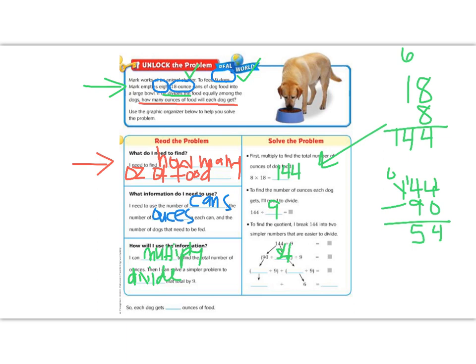So we think of our partial quotients. I've picked two numbers that are divisible by nine. And now I can divide in small chunks. So 90 divided by nine, that's 10. And then 54 divided by nine is six. And then I can add my two partial quotients, 10 plus six, and I get the answer 16. So each dog is going to get 16 ounces of food.